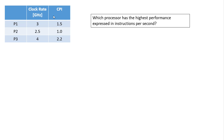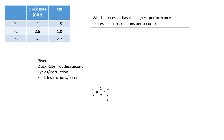So we want to find instructions per second and compare them all to find out which is the best performing. We'll write down the equation. We're looking for instructions per second, and note that we have clock rate, which is cycles per second, as well as cycles per instruction. We can set up the equation to cancel out the cycles and be left with instructions per second.